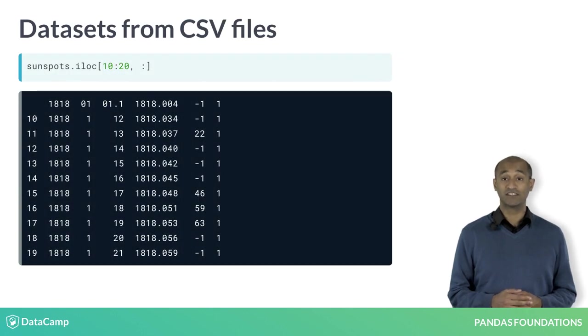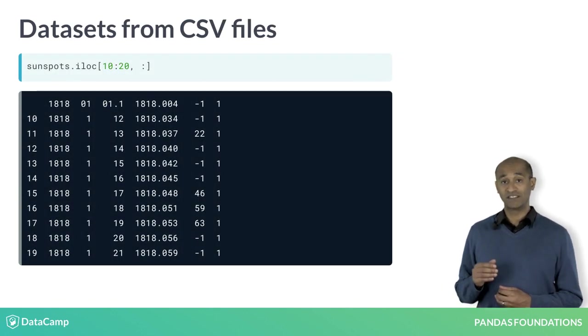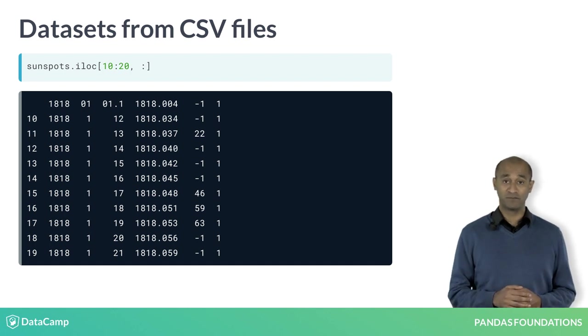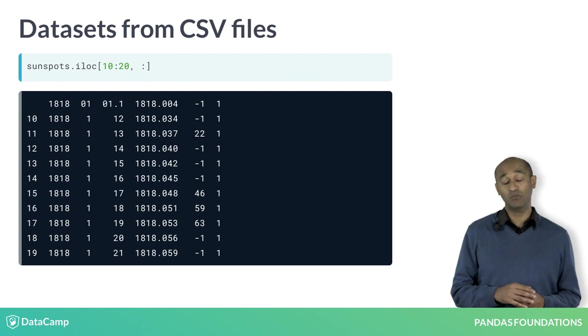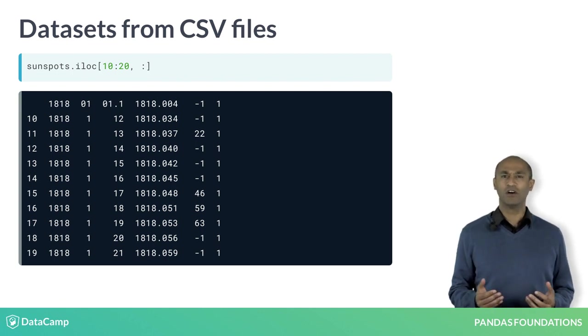Let's use the accessor.ilog to view a slice of the middle of the dataframe. We can now see some of the problems. The column headers don't make sense, and there are some perplexing negative 1 entries in one column. What's going on?